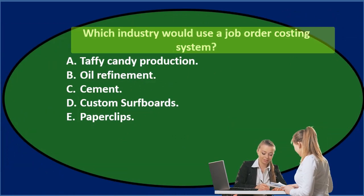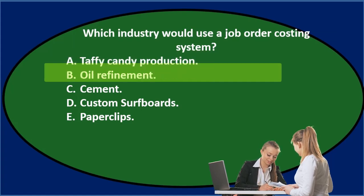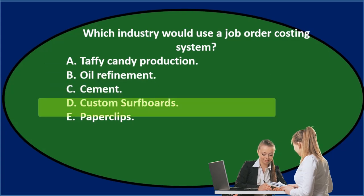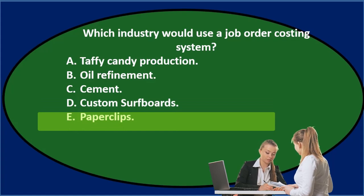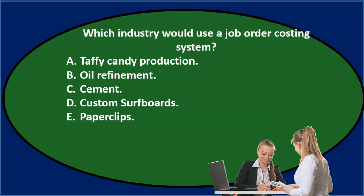Next question: which industry would use a job order costing system? A) taffy candy production, B) oil refinement, C) cement, D) custom surfboards, E) paper clips. Let's go through this again using the process of elimination.